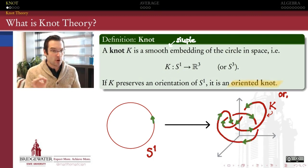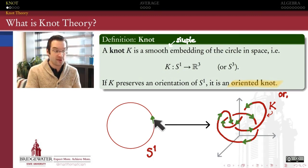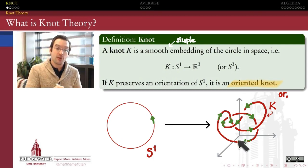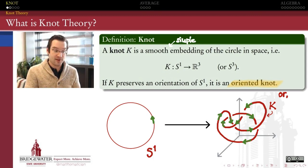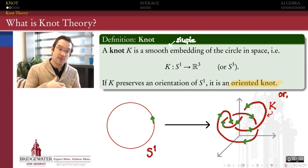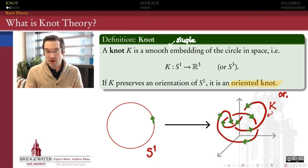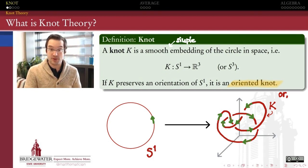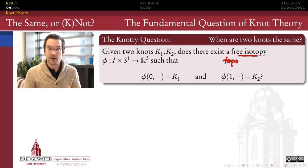If we fix an orientation on our circle — for instance, by parameterizing it counterclockwise — and our function preserves that orientation, then we also get an orientation on our knot. Sometimes studying oriented knots is important, sometimes less so. For about the first half of the seminar orientation won't matter, but for the second half we will introduce orientation and it will matter.